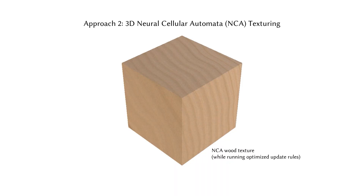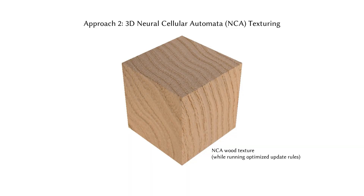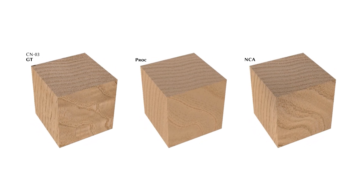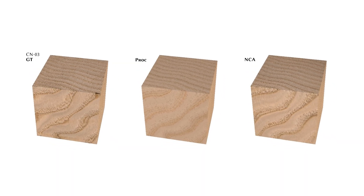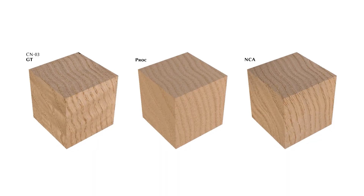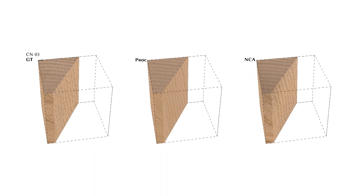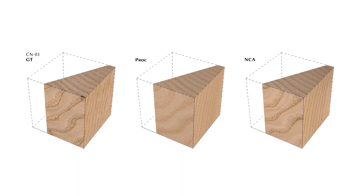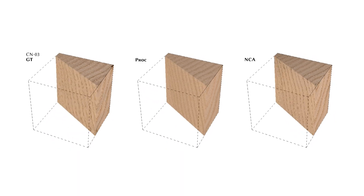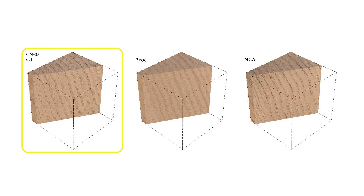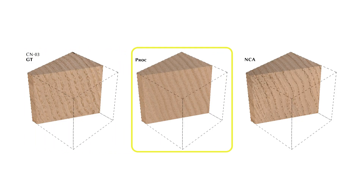The neural cellular automata approach repeatedly applies a learned neural update rule to create details starting from noise. Here are the results of the exemplar on which we just demonstrated the method, which is a chestnut sample with a distinct pore pattern. This is a slanted cut through the volume. We show a cube constructed from the ground truth photographs alongside our synthesized output textures from the two approaches: procedural texturing and neural cellular automata.